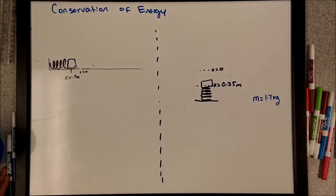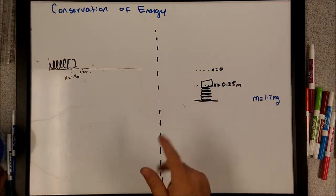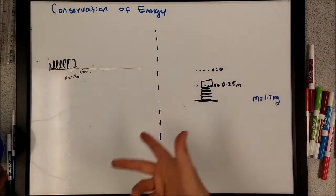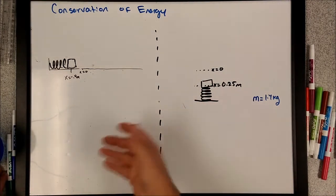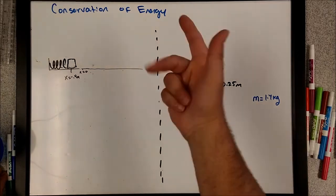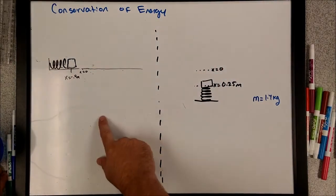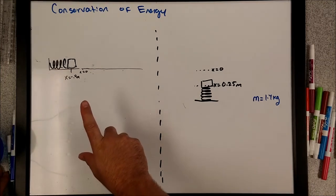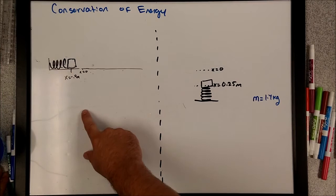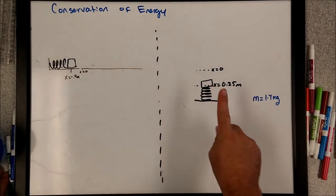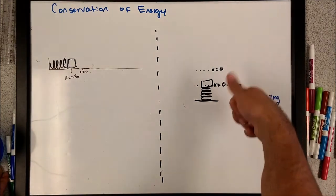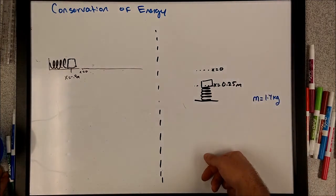Hey, Muso here. We're going to go through some more example problems in conservation of energy. In this video I'm just going to give two examples dealing with how spring energy can be converted into two different types. In this first scenario I have a block that's going to be compressed on a spring and it's going to eventually turn into kinetic energy. Over here I'm doing a similar problem where it's getting compressed down and it's going to shoot up into gravitational potential energy.